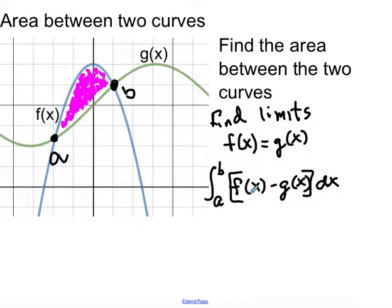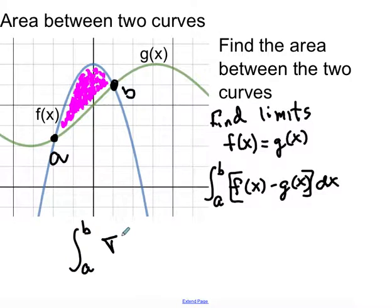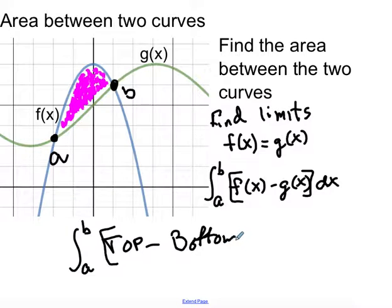This can be confusing because f(x) and g(x) could be switched. The easy thing to remember is it's always the top function minus the bottom function dx. This gives us the area between the two curves.